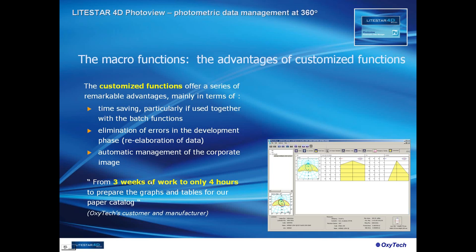The savings are significant. Additionally, there is elimination of errors in the development phase and re-elaboration of data. Previously, customers had to redraw polar curves and re-input all values manually, which introduced typing errors that were difficult to catch — meaning data published in the catalog could be wrong. With the customized functions, the program manages the conversion and creation of the layout automatically, so no errors come through the process. And automatic management of the corporate image ensures output always looks exactly as intended.